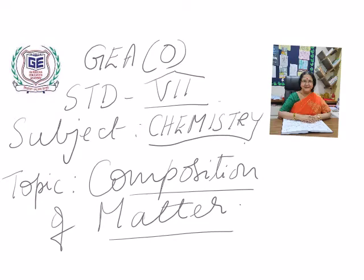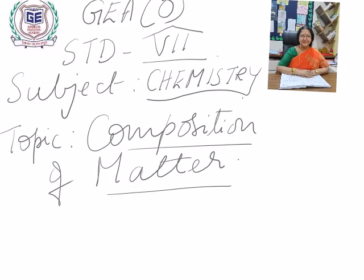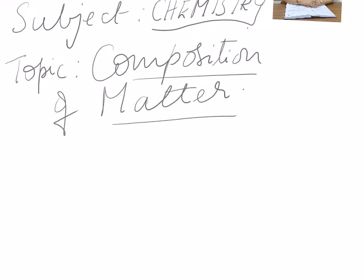Hello children, this is your Vanashree ma'am with chemistry subject. Today I'll be taking chemistry for you. The topic is composition of matter. Now you know what matter is — you must have already learnt in standard six that any substance that occupies space and has mass is matter. It has volume and it has mass. The things we see around us — table, books, desk — all these are matter which have mass and occupy space.